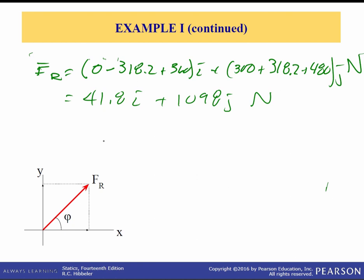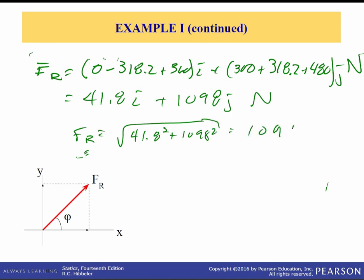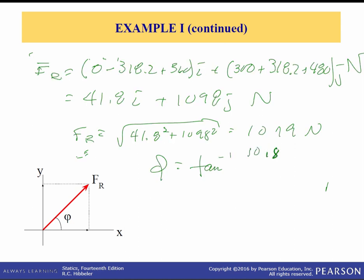If you want the magnitude of fR — note I didn't put a line above this, so it's a scalar — the magnitude is the square root of 41.8 squared plus 1098 squared, which equals 1099 newtons. The angle phi equals the inverse tangent of the y component 1098 divided by the x component 41.8, so phi is 87.8 degrees.